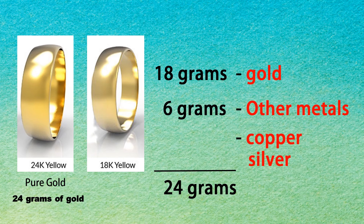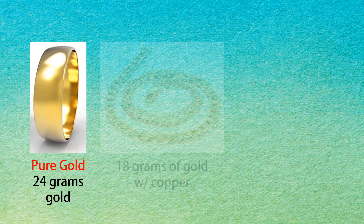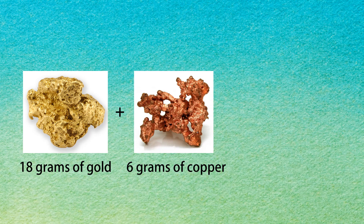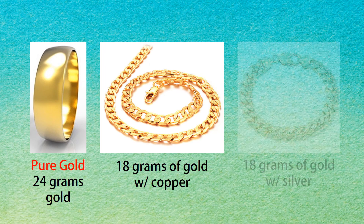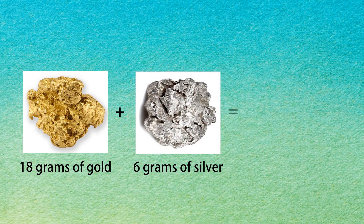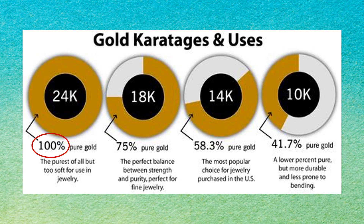Let us identify the difference between pure gold and 18-carat gold. Here is a pure gold jewelry with 24 grams of gold — its color is yellow. Here is 18 grams of gold with copper, formed when 18 grams of gold is mixed with 6 grams of copper — its color is reddish yellow. Another type of 18-carat gold is 18 grams of gold with silver, a combination of 18 grams of gold and 6 grams of silver — its color is light yellow. So: 24 carats is 100% gold, 18 carats is 75% gold, 14 carats is 58.3% gold, and 10 carats is 41.7% gold.